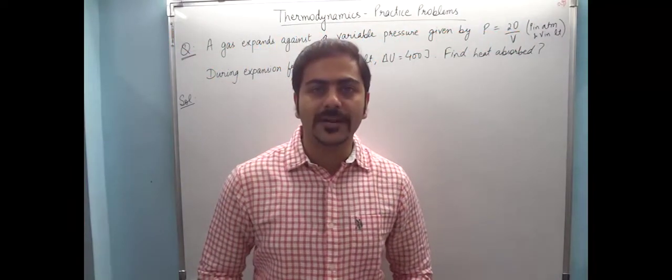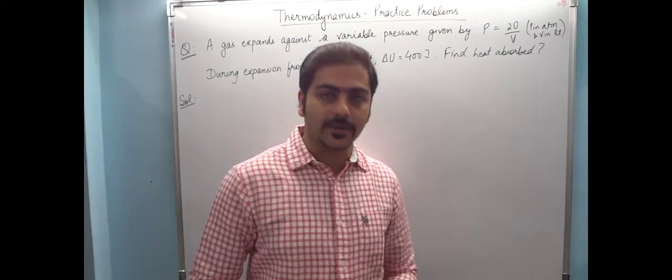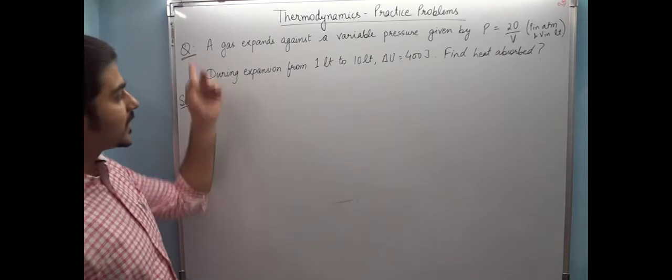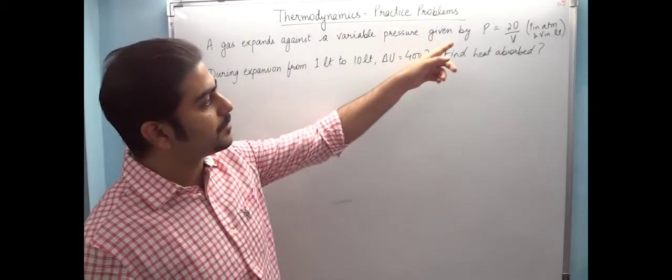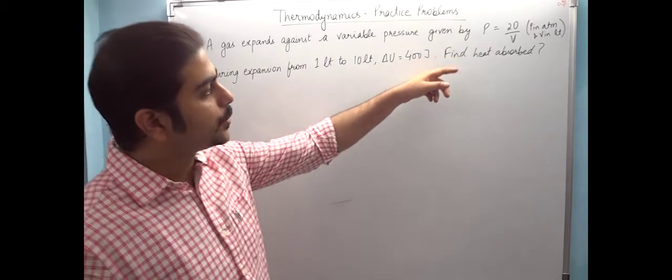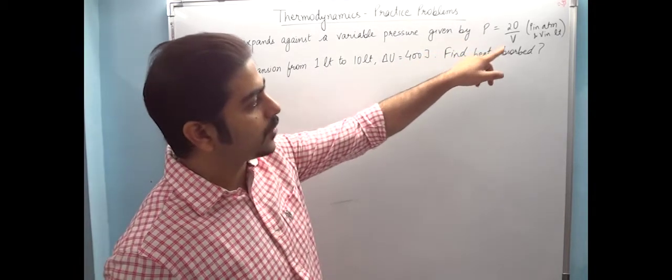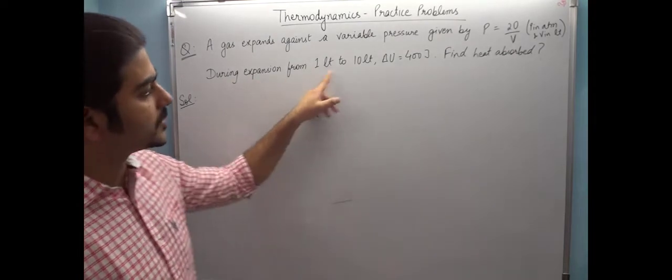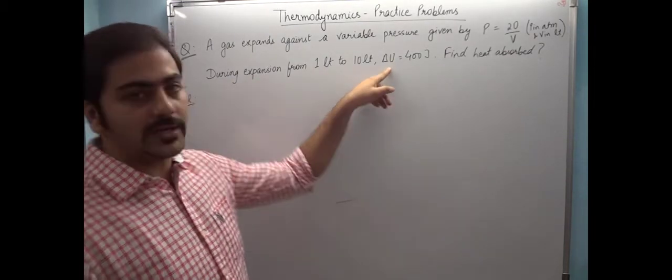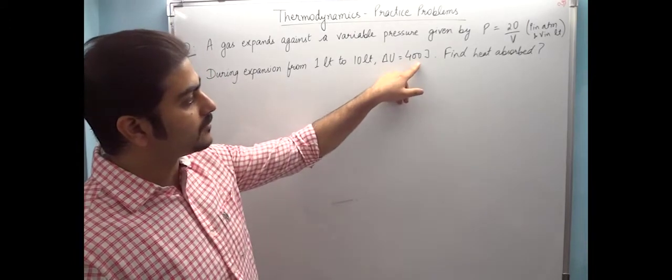Hi friends, let's do one more practice problem on thermodynamics. The question is: a gas expands against a variable pressure given by P = 20/V, where pressure is in atmospheres and volume is in liters. During expansion from 1 liter to 10 liters, delta U (change in internal energy) is found to be 400 joules. Find the heat absorbed.